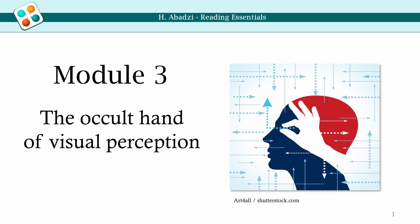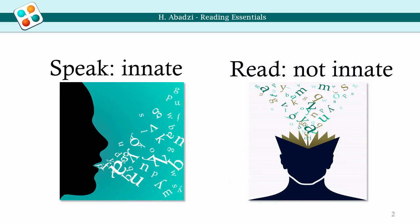Module 3: The Occult Hand of Visual Perception. Reading is not innate. It arose only a few thousand years ago, and relies on brain circuits used to find small objects or recognize faces. This module discusses the functions involved in visual perception.